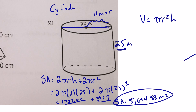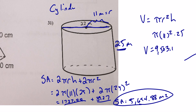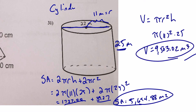Volume = πr²h = π(11²)(25). That's a bit simpler — plugging into the calculator gives volume ≈ 9,503.02 cubic meters. That's it for volume and number 31.